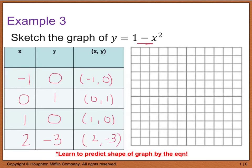Before graphing, I'll predict the shape. I see a negative x squared — a negative second-degree polynomial — which tells me I'll have a downward-facing parabola. When I plot the points and connect them, I confirm it is a downward-facing parabola. It's very important that you learn to predict the basic shapes of functions.